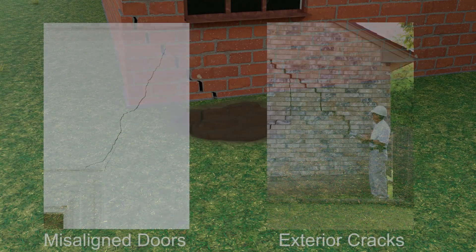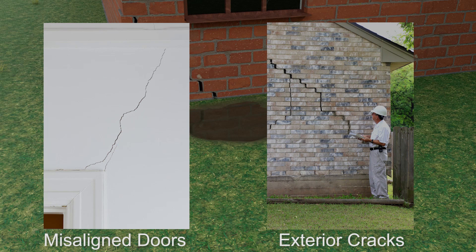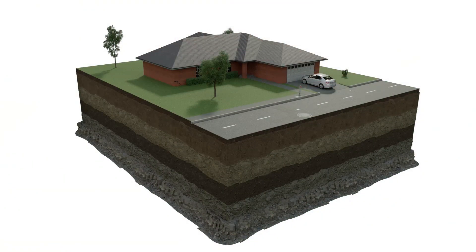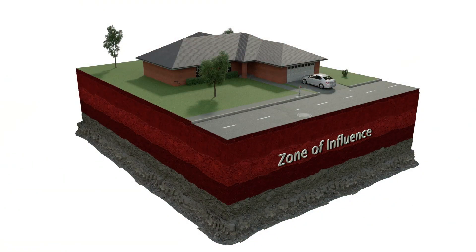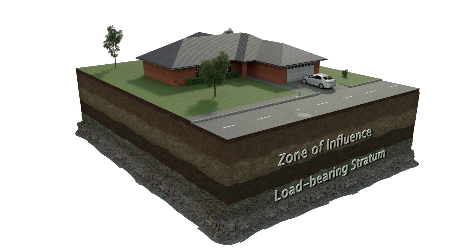Here are two photos that show typical signs of foundation failure — the first being cracks in the sheetrock around misaligned doors, and the other stair-step cracks in the exterior brick veneer. The top three layers we discussed earlier are within what's called the zone of influence — the soils that can move and shift causing damage to your home. Beneath it is the load-bearing strata, where the structure must be properly supported.